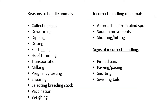The first thing is reasons why we would want to handle animals. This is important and usually asked for a two or three mark question. Some obvious things: the first is to collect eggs from chickens; deworming your animals to make sure there are no internal parasites; then dipping to get rid of parasites on the outside of the animal.